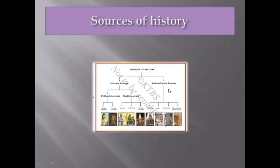In literary sources there are two types: written literature and oral literature. In written literature, there are again two types: native literature and foreign literature. In oral literature, there are three types: ballads, folk tales, and historical legendaries. In archaeological sources we can see monuments, coins, inscriptions, and other archaeological remains.